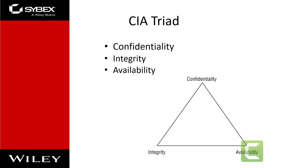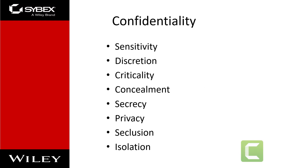Confidentiality, integrity, and availability are so commonly seen as security essentials that they are referenced by the term CIA triad. Security controls are typically evaluated on how well they address these three core information security tenets. A complete security solution should adequately address each of these tenets.